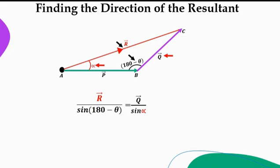So this is a statement of sine rule. So if you have a knowledge of R, the resultant, Q, and theta, you can find alpha. So I think that is a little bit clear.